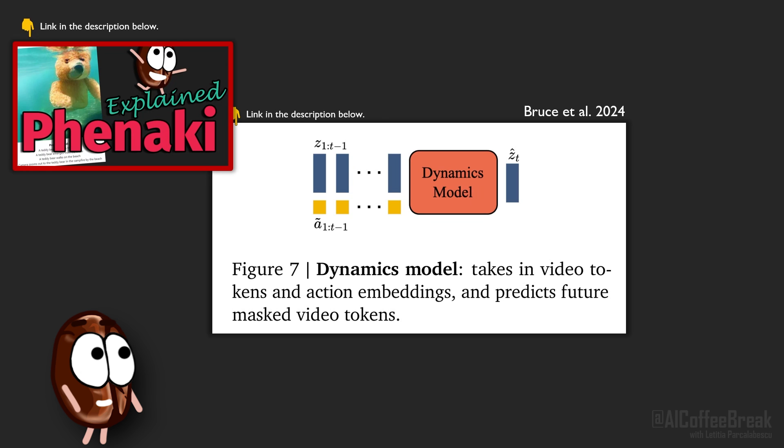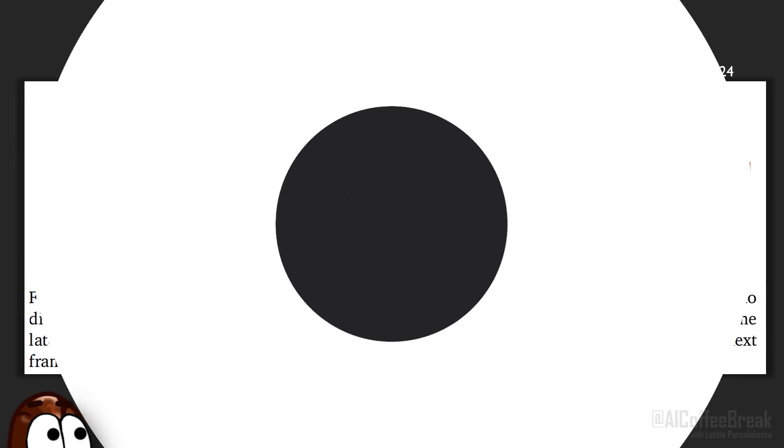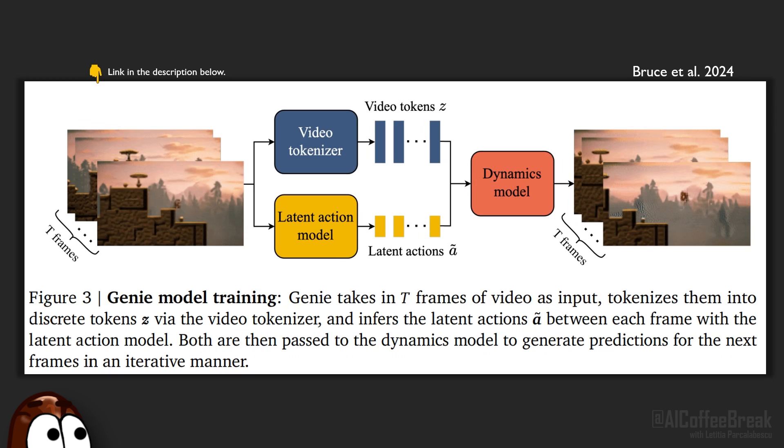Which we explained in detail in the Phenaki video at minute 9:33. So to summarize what we said there, the authors randomly mask input tokens and reconstruct them not all at once but in a few steps. How is this modular beast trained? Well, the authors train the video tokenizer first because it is needed by the dynamics model, then they train the latent action model directly on image pixels and the dynamics model on video tokens simultaneously.